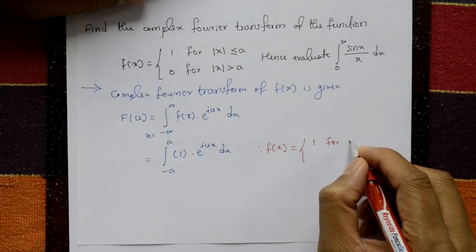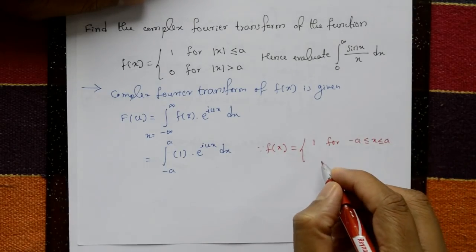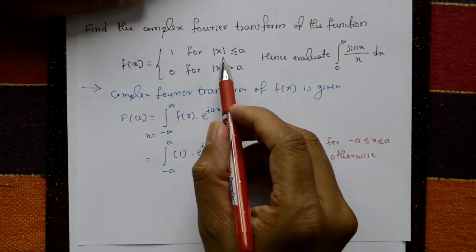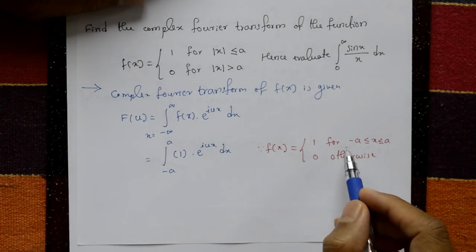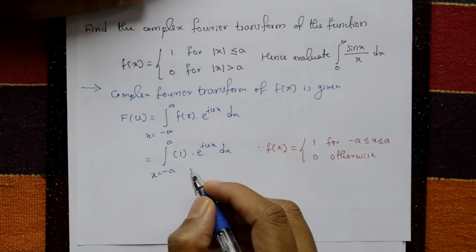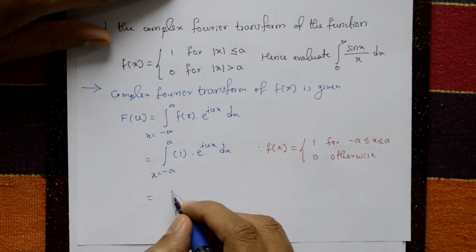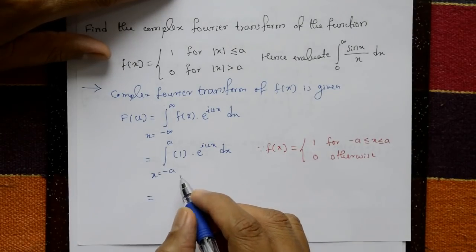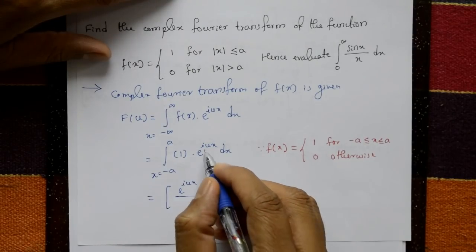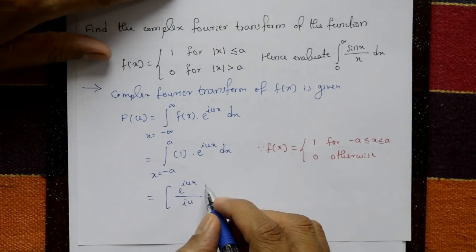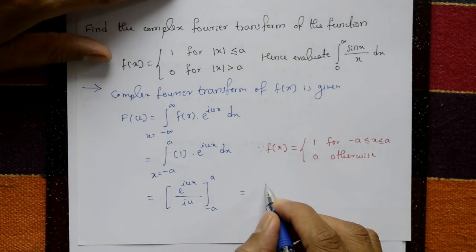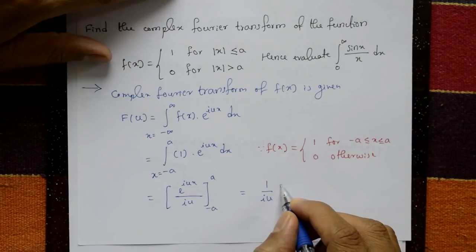Since f(x) is 1 for minus a ≤ x ≤ a and 0 otherwise, the integral reduces to the integration from minus a to plus a. Integrating e raised to i·u·x with respect to x gives e raised to i·u·x divided by the constant i·u, evaluated from lower limit minus a to upper limit a.